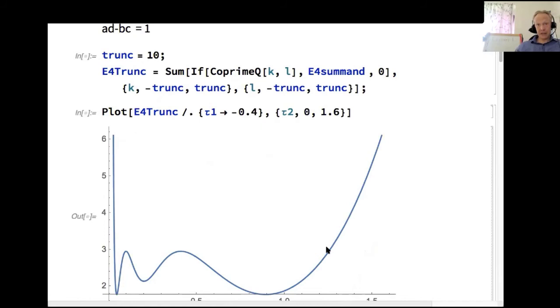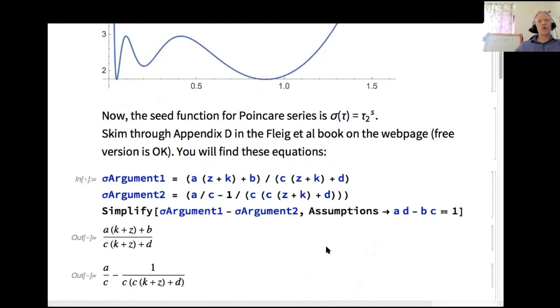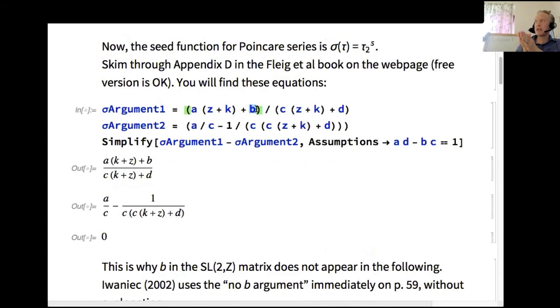But it's good to experiment what happens if you take away this if statement in my sum. So this is the non-holomorphic Eisenstein series as a function of tau 2, by just this double sum construction. And I won't go through the whole file, but just to give you an idea of what I'm doing here. First, I make sure that nothing depends on the parameter B. B is one of the entries in the SL2Z matrix. So this refers to specific expressions in appendix D in the Flajolet et al. book.